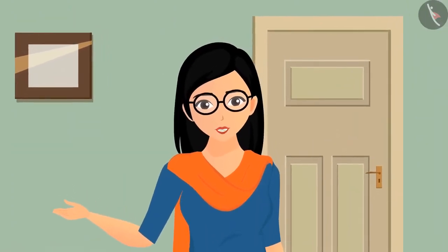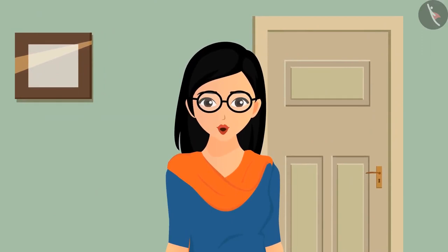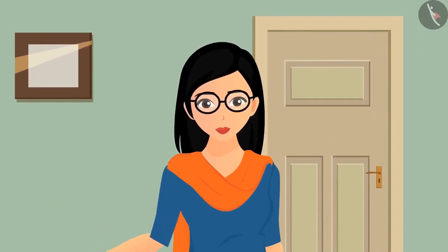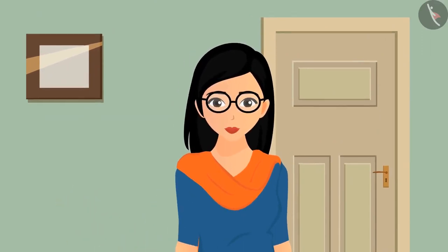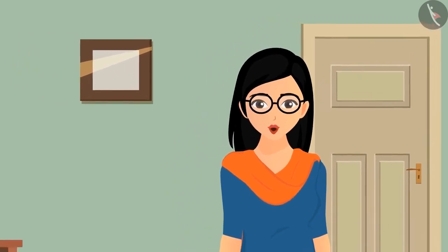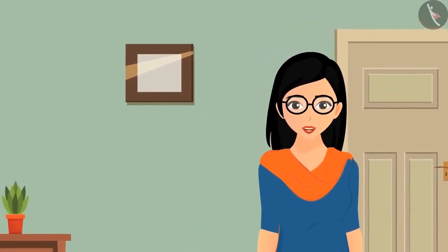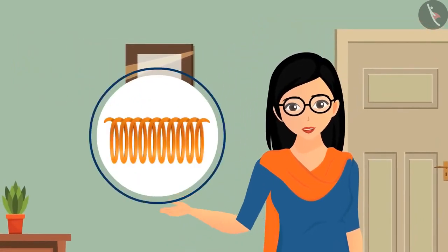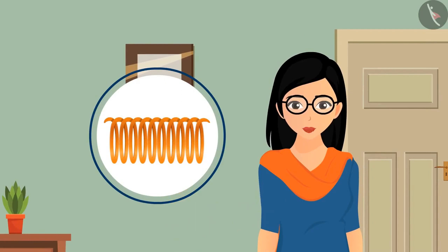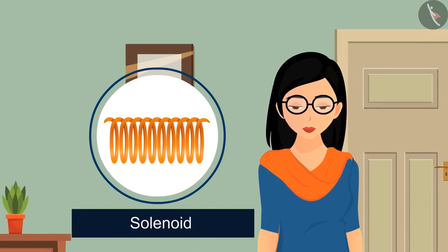You must be thinking — what was the reason behind understanding the circular loop? You will get to know the reason by the end of this video. What will happen if you take a number of loops and make a coil out of them? This coil, in scientific terms, is known as a solenoid.